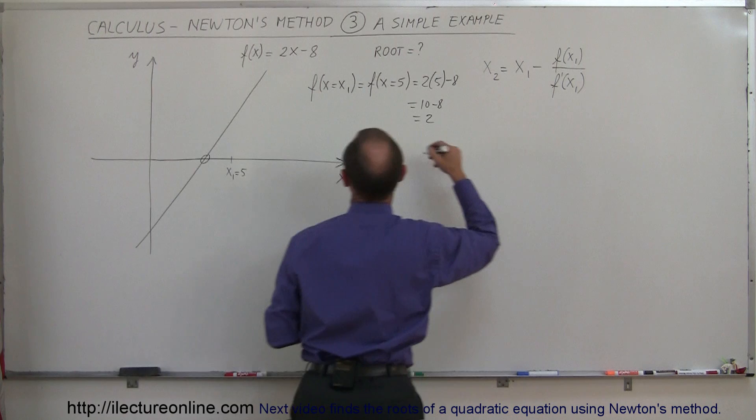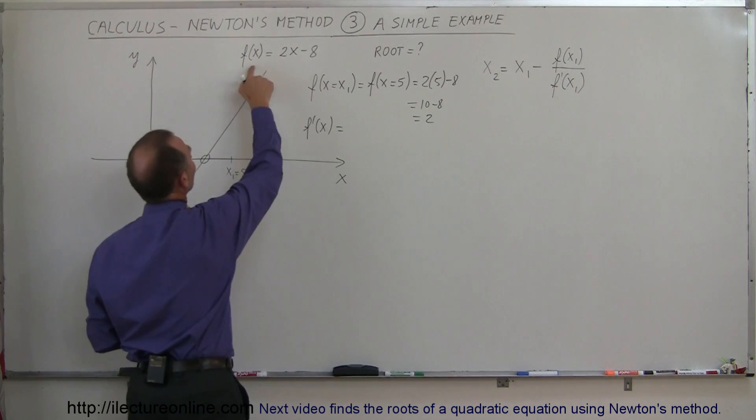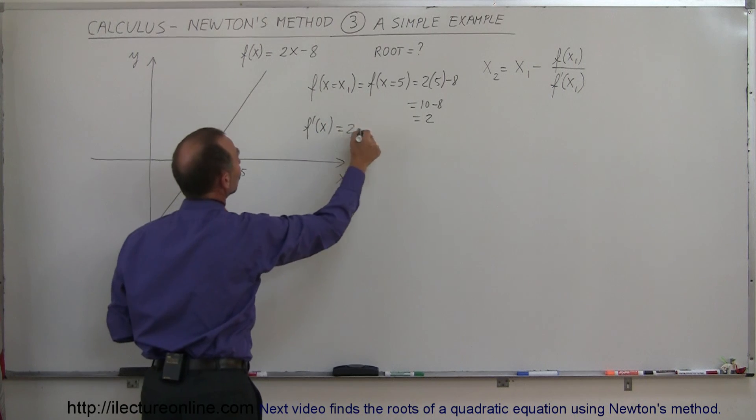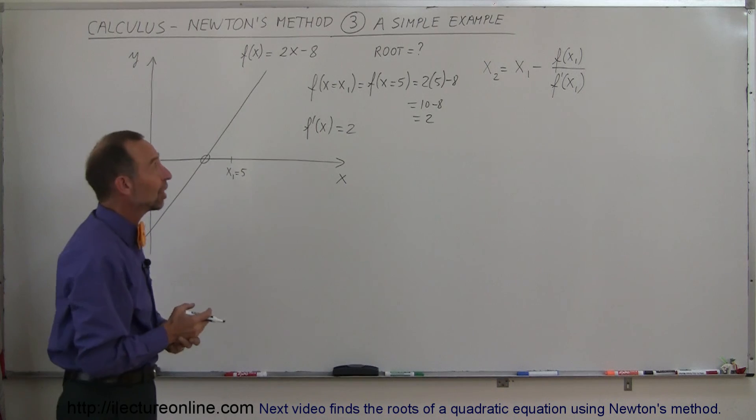And then we take the derivative of the function, so we say f'(x) is equal to, if this is the function, the derivative would simply be 2, and so we don't have to evaluate it, it's always equal to 2, because we know the slope of a straight line doesn't change.